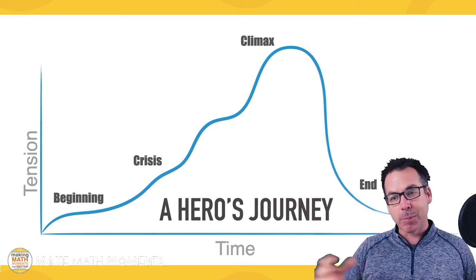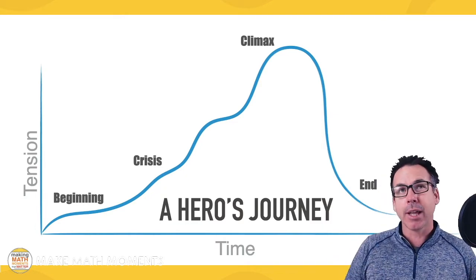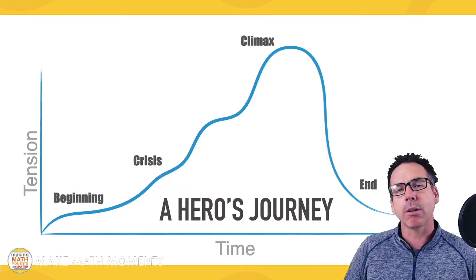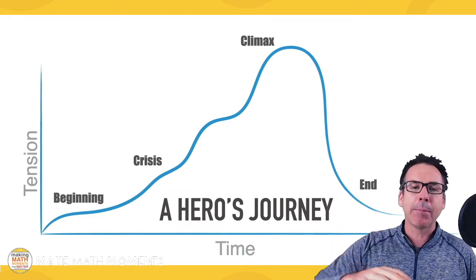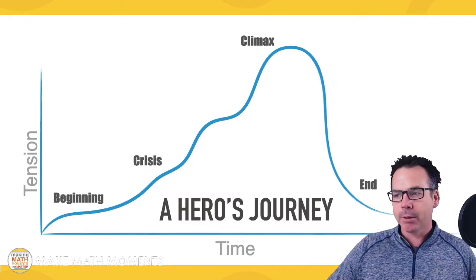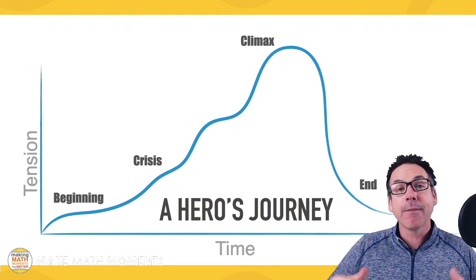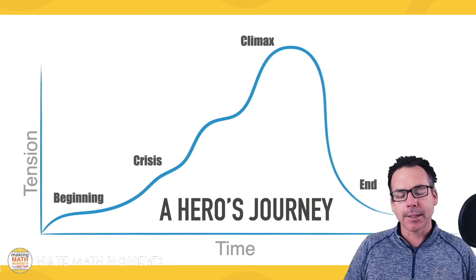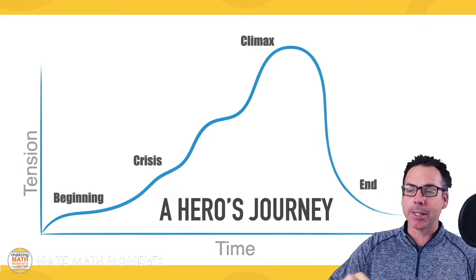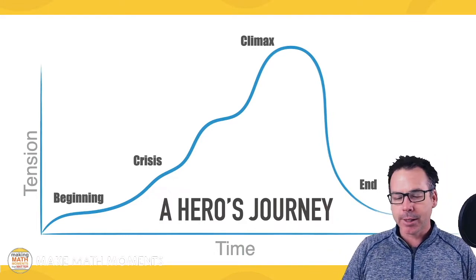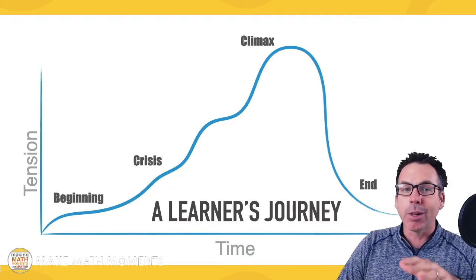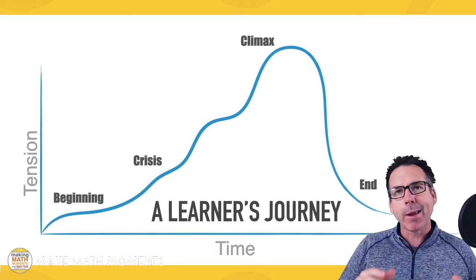Blowing up the Death Star is only awesome because of the struggle Luke had to go through. You can substitute the Death Star and Luke for any other character in these adventure stories — they're all exactly the same. The story ends at that climax, and it was the struggle that made it awesome. If Luke blew up the Death Star right at the beginning, it wouldn't have the same effect. Then the character returns home, and the tension isn't fully relieved because they're a different person. This isn't just a hero's journey — this is also a learner's journey.